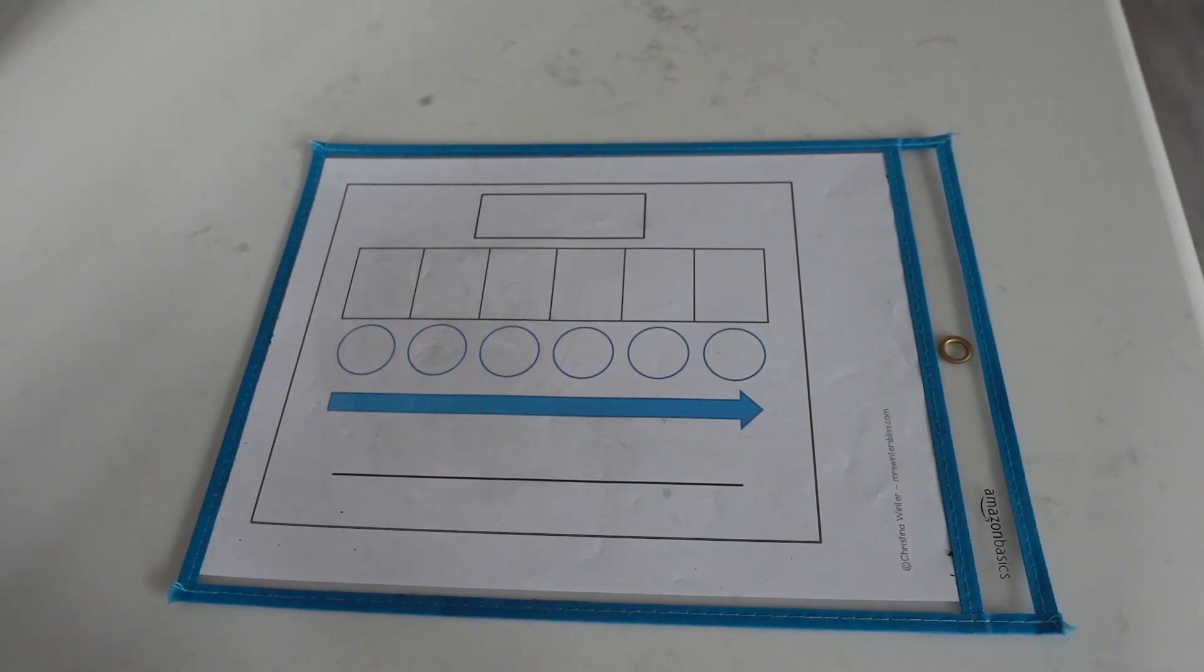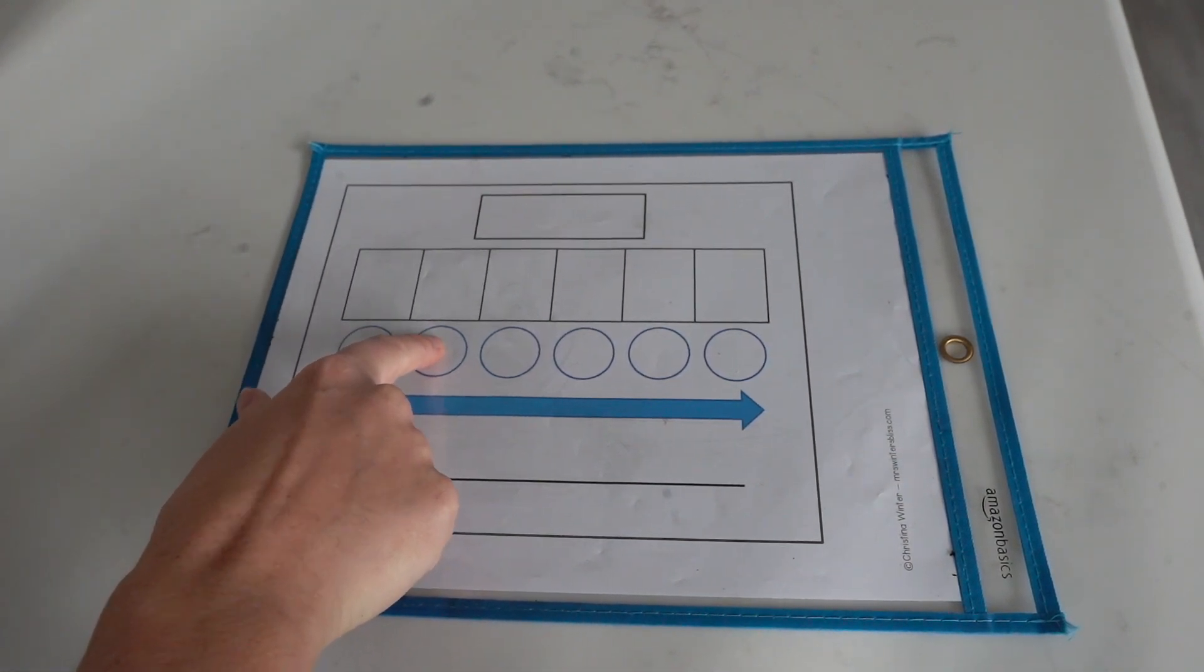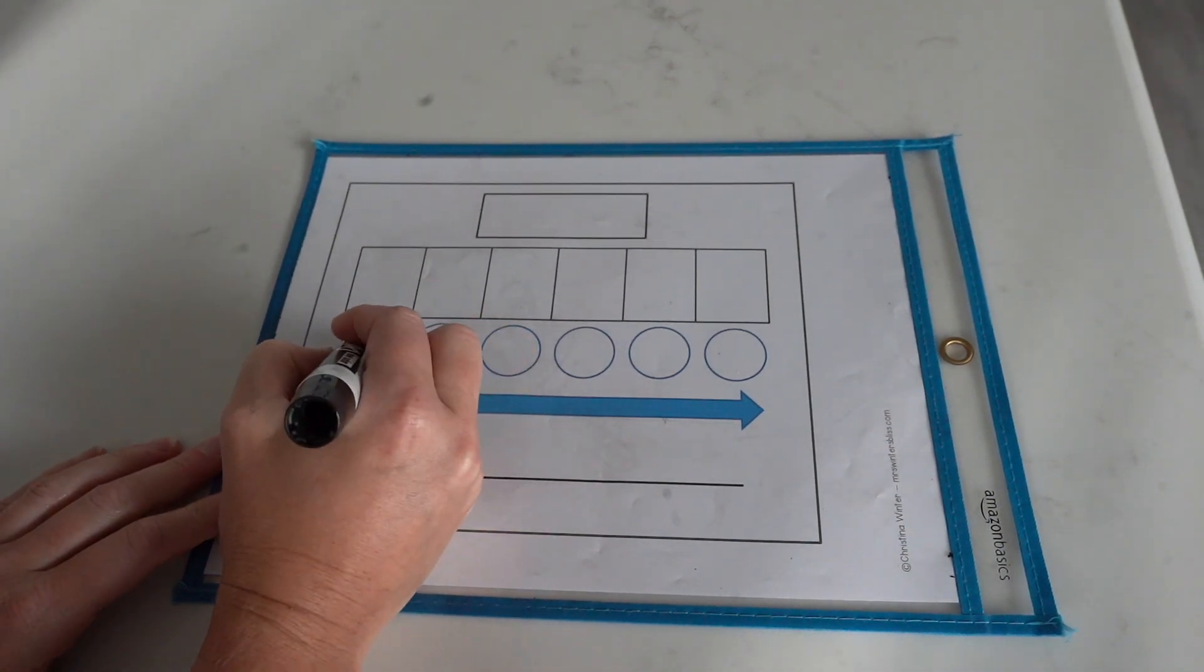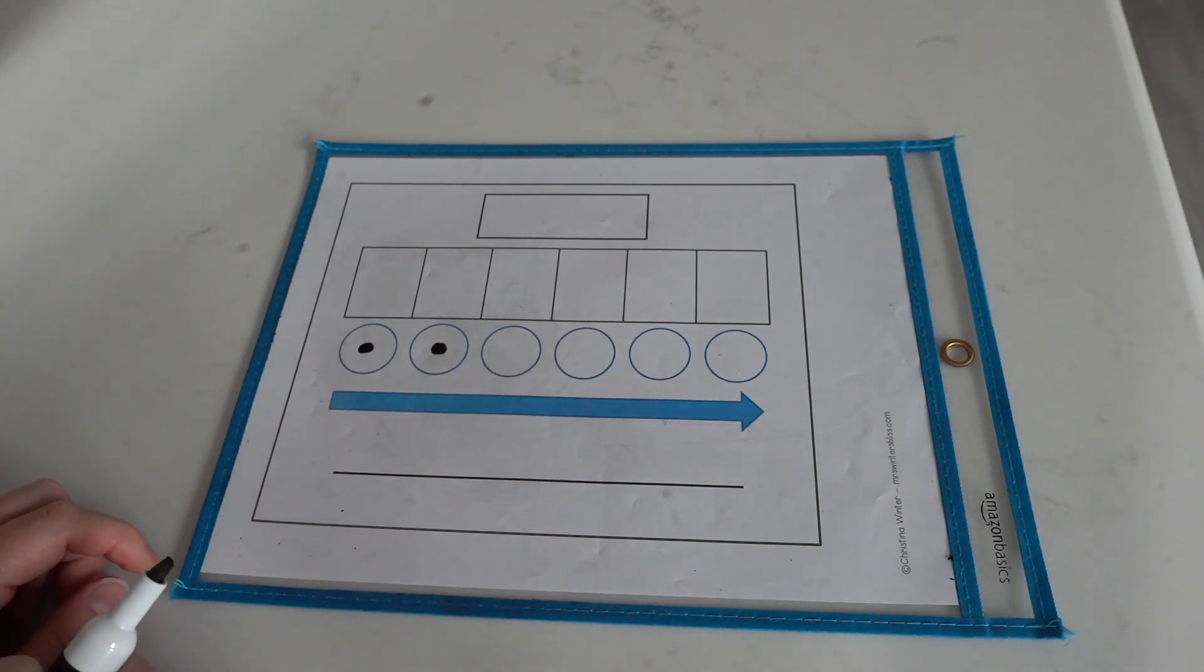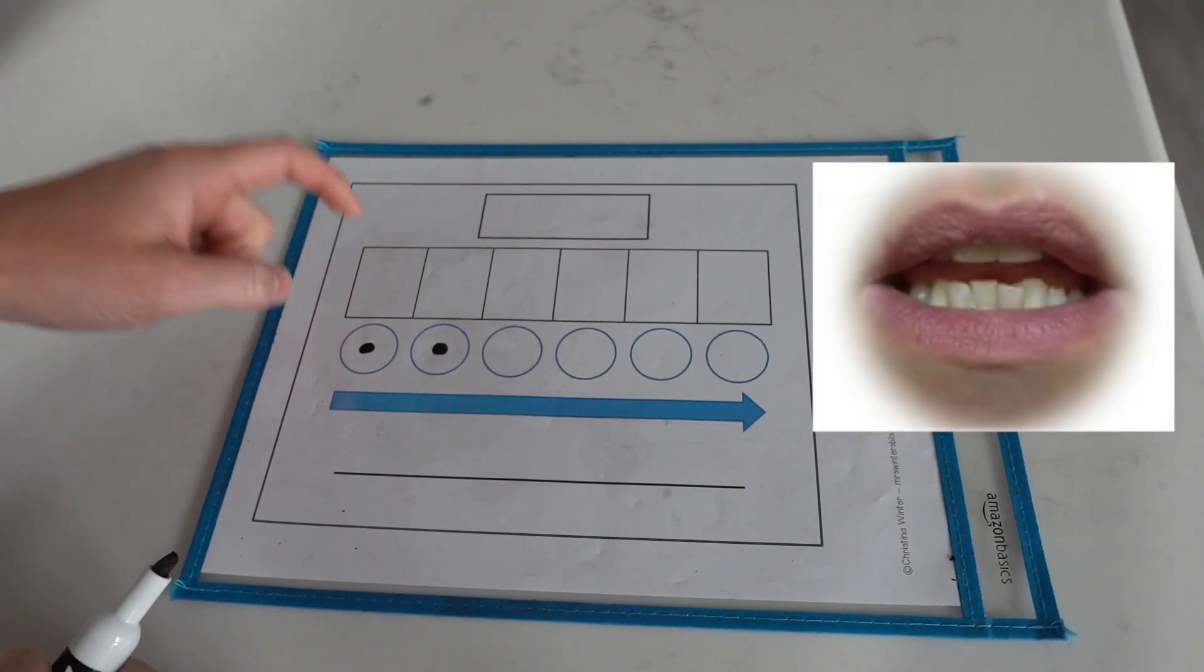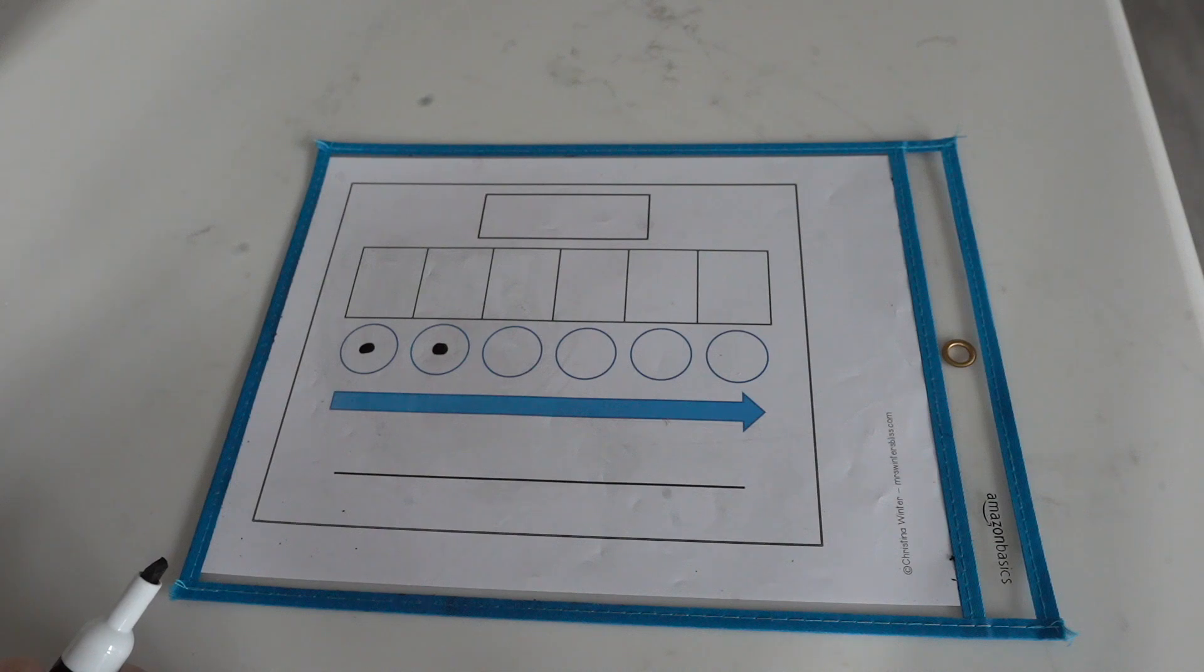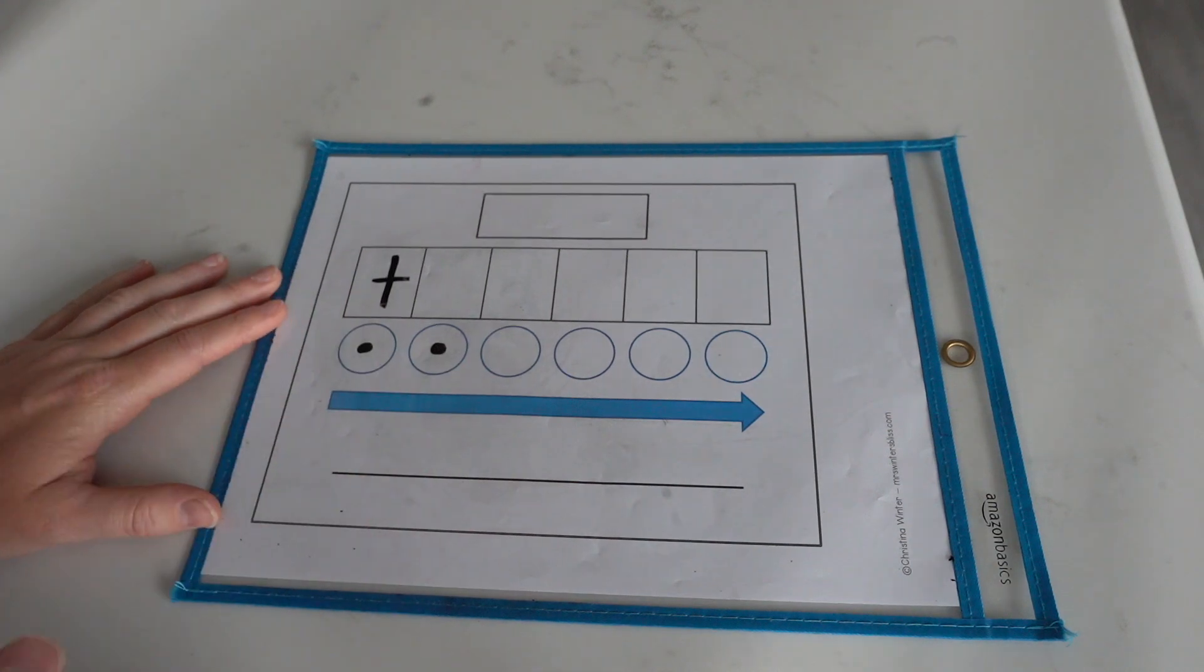Our next word is the word 'two'. Let's tap the sounds in the word 'two'. Wow, there are two phonemes. Now let's spell the sounds. The first sound I hear is t. My voice box is not on. I know that consonant is t.